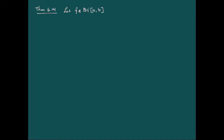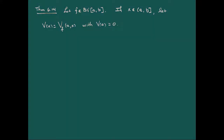That's really what we have here as the content of theorem 6.14. If we've got a function of bounded variation on [a, b], then if we pick some point x not equal to a in the interval [a, b], and we let v of x be the total variation of f from a up to the point x, with v of a being zero — the same v of x we defined previously —